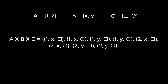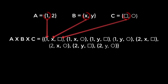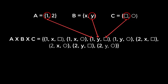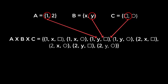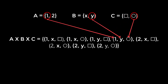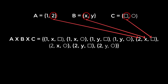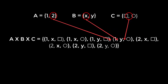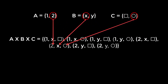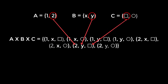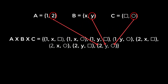A cross B cross C is the set of (1, X, square), (1, X, circle), (1, Y, square), (1, Y, circle), (2, X, square), (2, X, circle), (2, Y, square), and (2, Y, circle).